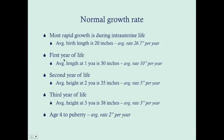The normal growth rate — looking at it in terms of years of life — is most rapid during intrauterine life. The average birth length is 20 inches, so the average rate is about 26.7 inches per year. During the first year of life, the average rate is about 10 inches per year. The average length of a child is about 30 inches on their first birthday.